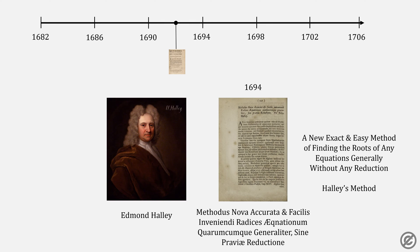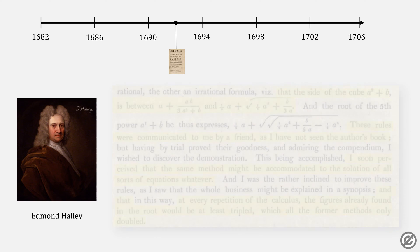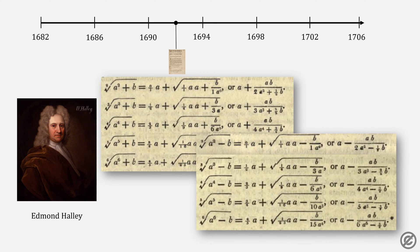Two years later, Halley published this paper, which expanded upon that cube root finding. He gives Delauny's formula, and then notes that these rules were communicated to a friend, but he did not read the author's book. He writes: "I soon perceived that the same method might be accommodated to the solution of all sorts of equations whatever, and that at every repetition of the calculus, the figures already found in the root would at least be tripled, which all the former methods only doubled." Halley gives these two sets of equations for finding nth roots, which we can generalize.